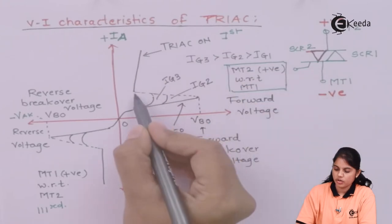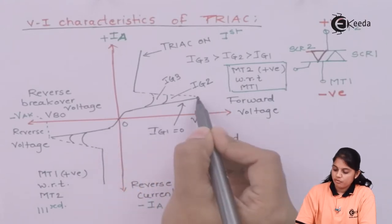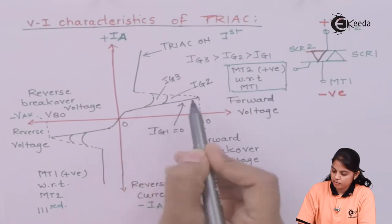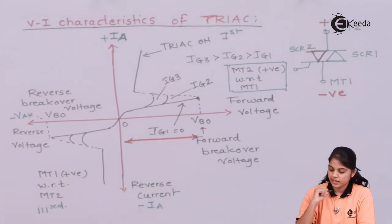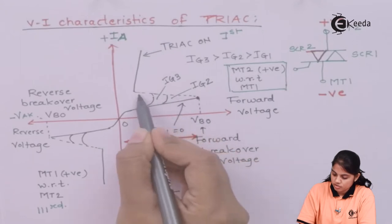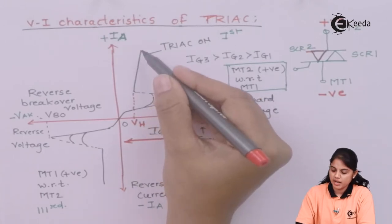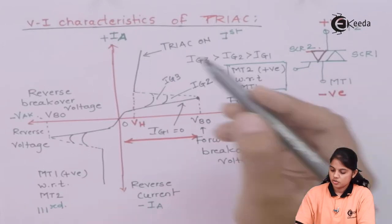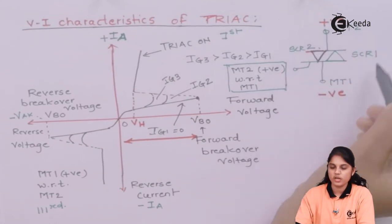Once the forward voltage reaches VBO, with a gate current applied, SCR2 can be turned on. Looking at the graph, until this point the TRIAC is in forward blocking mode. When gate current is provided, the forward voltage is reduced to VH (holding voltage) and current increases simultaneously. Due to this increase in current flowing from anode to cathode, the SCR starts conducting. So the whole device — the TRIAC — is now on.